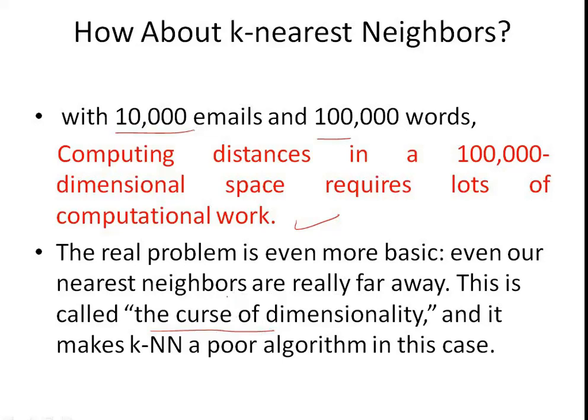In k-nearest neighbor, we always do online training, not offline training. In some supervised learning algorithms, training is done once and then we only perform testing; if the training dataset changes, then we retrain, otherwise we do not. But in k-nearest neighbor, every time we need to train it — that is why we call it online training. It requires a lot of time to compute. That is why k-nearest neighbor is not good for spam filtering, making KNN a poor algorithm for this particular problem.